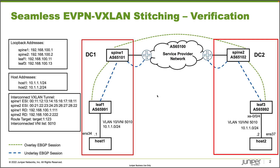Here is our topology. In this topology, we have two different data centers, DC1 and DC2. In DC1, we have two QFX devices — Spine1 and Leaf1 — and then the Host1 device. Host1 is a part of VLAN 10 and uses VNI 5010. Its address is 10.1.1.1.